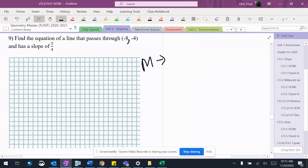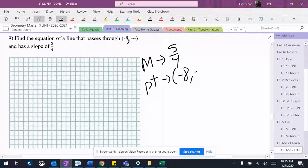So we go back here to - they give me the information I need. The slope is 5 fourths, the point is negative 8, negative 4. So there's nothing for me to find.